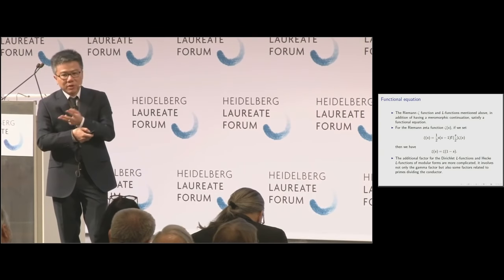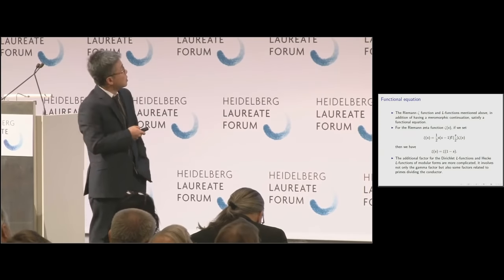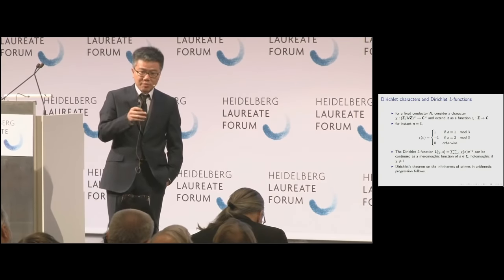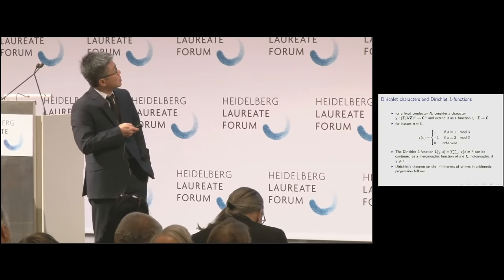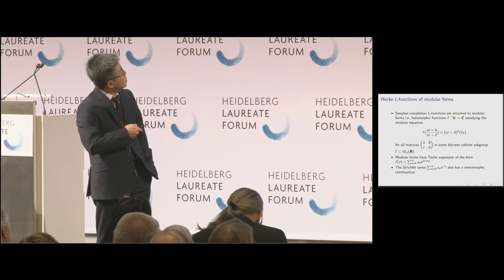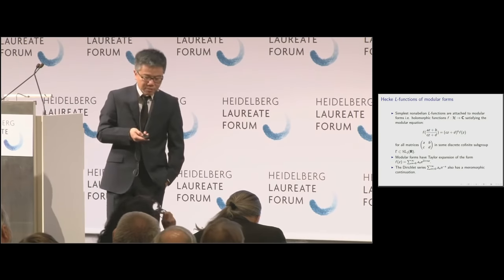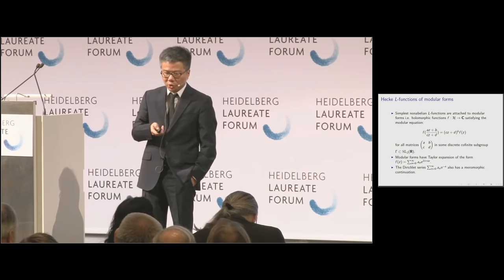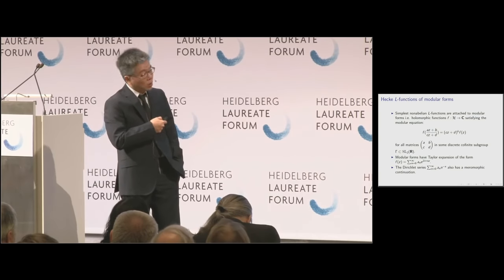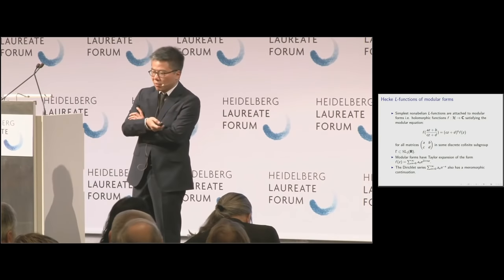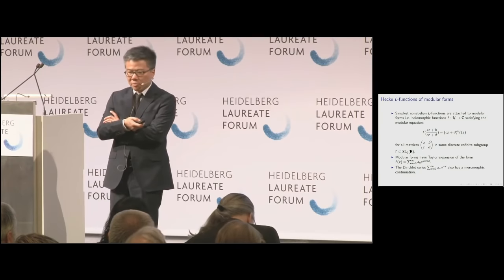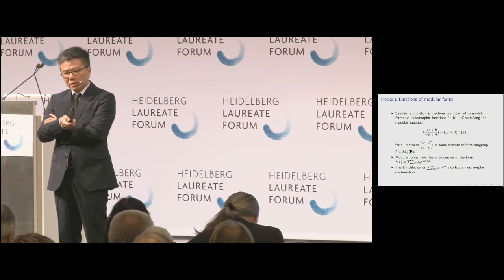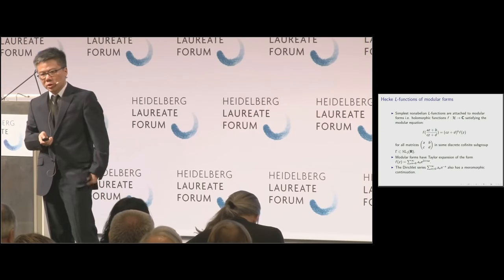For Dirichlet L-functions, besides the gamma factors at infinity, you also need factors depending on certain primes p that divide the conductor. For modular forms, if gamma = SL_2(Z) you don't need to add anything at finite primes, but if gamma is a smaller group you need additional local factors. At that stage it can be confusing what to add — it's case by case — you need to add something so that you have a functional equation.